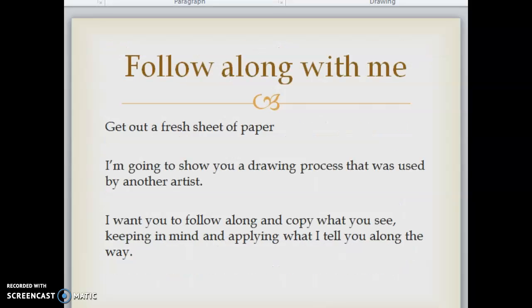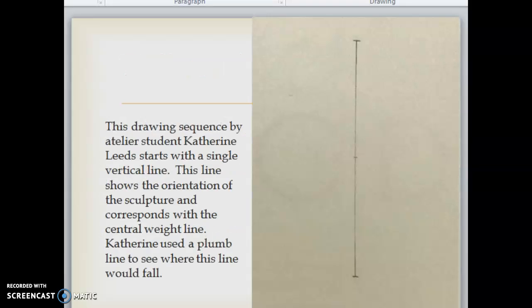So I want you to get out a first sheet of paper and you're going to follow along with me. I'm going to show you a drawing process that was used by another artist. I want you to follow along and copy what you see, keeping in mind and applying what I tell you along the way. This drawing sequence starts with a single vertical line. This line shows the orientation of the sculpture and corresponds with the central weight line. Catherine used a plumb line to see where this line would fall.